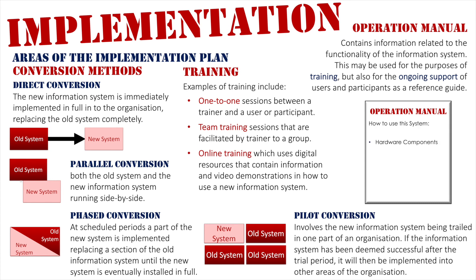The operations manual covers things such as hardware components — what the new system is made up of — with diagrams showing where specific buttons are and what those buttons do. It will have procedures going step by step on how to complete operations within the new system, as well as a troubleshooting section with strategies to solve common problems if a user gets stuck. It might also have a frequently asked questions section with standard responses to common queries, particularly for systems used across multiple sections of an organization.